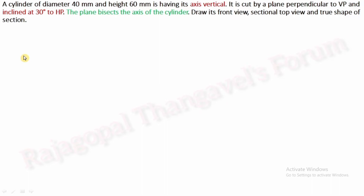Hello students, welcome back. In this video we will discuss a cylinder section of solid. A cylinder of diameter 40 mm and height 60 mm is having its axis vertical. It is cut by a plane perpendicular to VP and inclined at 30 degrees to HP. The plane bisects the axis of the cylinder. Draw its front view, sectional top view and true shape of section.